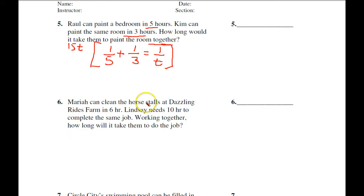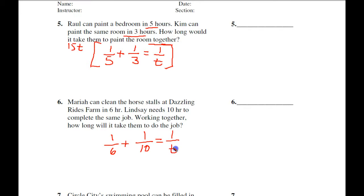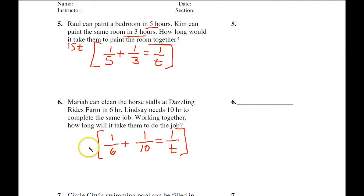Mariah can clean the horse stalls at Dazzling Rides Farm in 6 hours, so her rate is 1 over 6. Lindsay needs 10 hours, so her rate is 1 over 10. Working together gives 1 over T. You might have said the common denominator is 60T, which would be okay, but the least common multiple is 30T — and both give the same result.